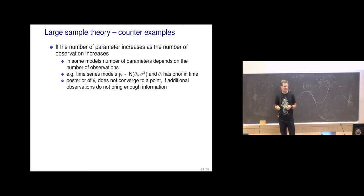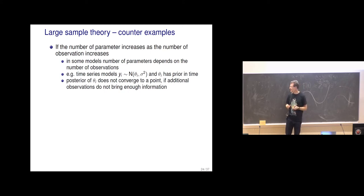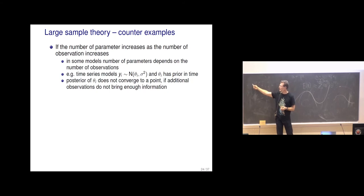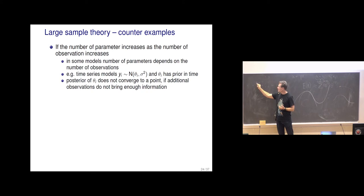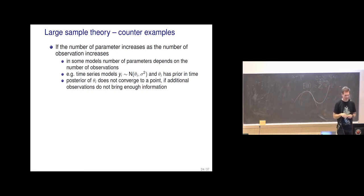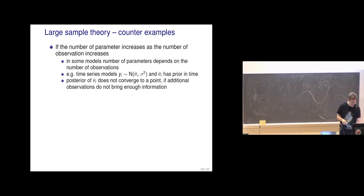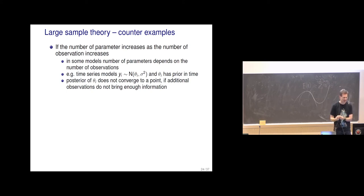In time series, we have an unknown latent value at each time point and the number of unknowns is also increasing. So the posterior of each time point does not converge to a point. Of course it depends on the model — there might be strong dependency in the prior for latent values which could make it converge to a point, but that needs additional constraints to be checked.